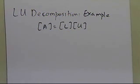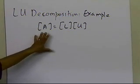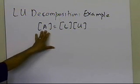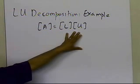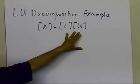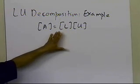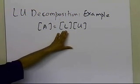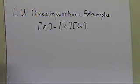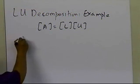As mentioned in a separate segment, one of the ways to find A equals L times U is by following the same steps of forward elimination as given in the Naive Gaussian method. So if you follow the forward elimination steps of the Naive Gaussian method, you'll be able to determine what L and U should be. Let's go ahead and see how we do that through an example.